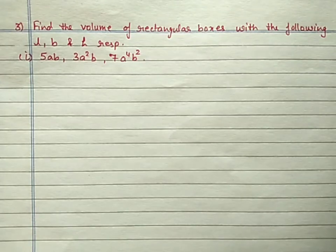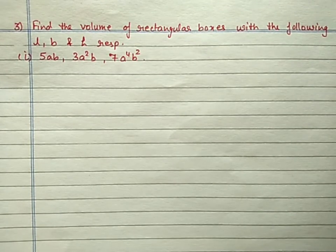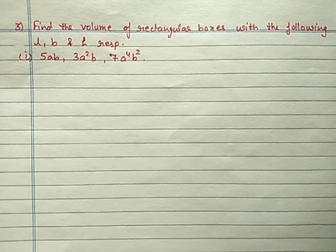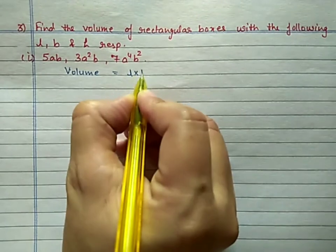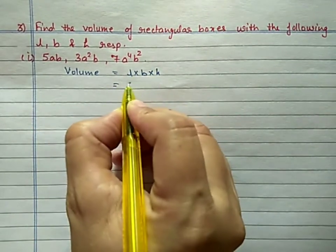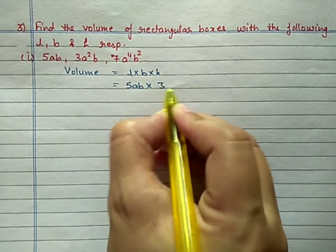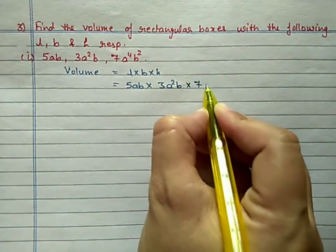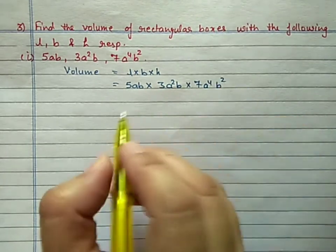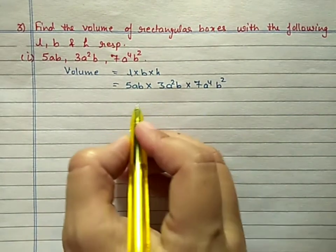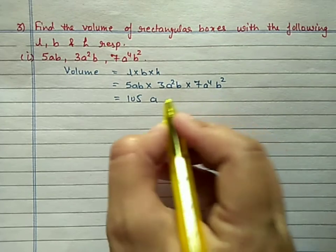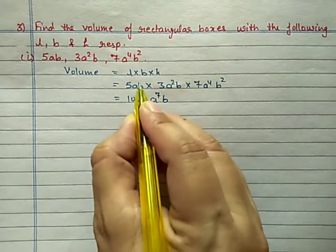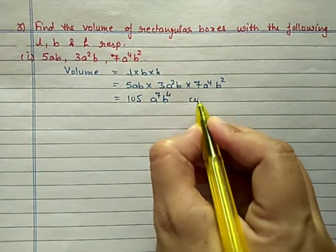Question number 3: Find the volume of a rectangular box with the given length, breadth, and height. Formula for volume is length × breadth × height. Length is 5ab, breadth is 3a²b, and height is 7a⁴b². Multiply numbers: 5 × 3 = 15, 15 × 7 = 105. For a: powers 1 + 2 + 4 = 7. For b: powers 1 + 1 + 2 = 4. Answer: 105a⁷b⁴ cubic units.